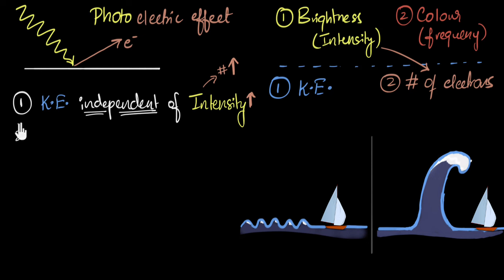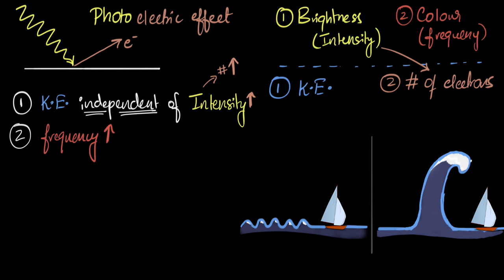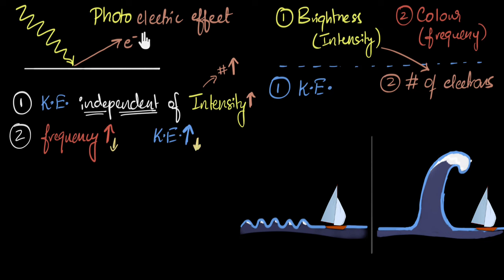Time for a second shock — something even more weird. They changed the frequency or color of the light, keeping the brightness or intensity exactly the same. And you know what they found? They found that increasing the frequency increases the kinetic energy of the ejected electrons. If you increase the frequency, kinetic energy increases; if you decrease the frequency, kinetic energy decreases. People were baffled: why does frequency matter? If you increase the number of waves per second, for some reason electrons get more energy — even though intensity is kept the same.